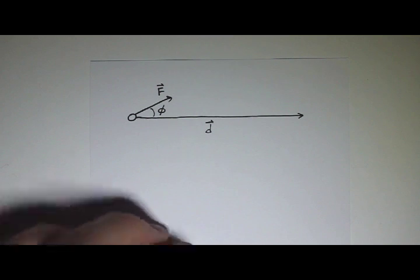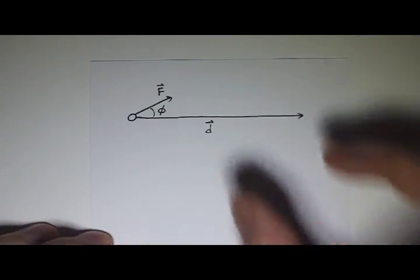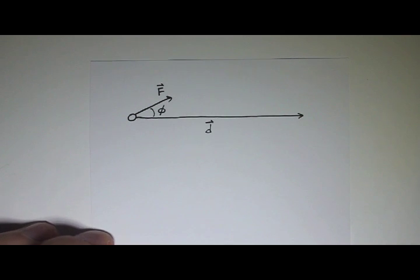Remember, vectors don't really have a place in space that is set. We can pick them up and move them around wherever we want. So if you need to, you can pick up one of the vectors and place it at the tail of the other one so that we can figure out what that angle is. We'll do some problems and you can see how that works. But in general, this is your angle right here between force and displacement.